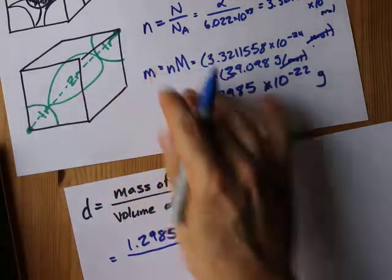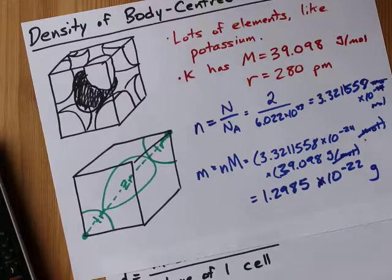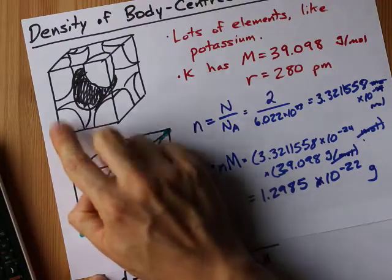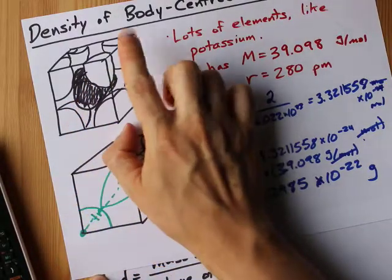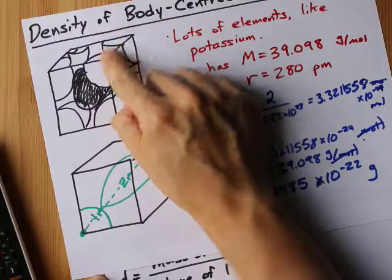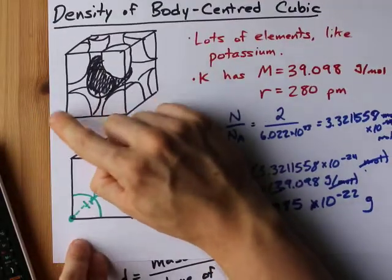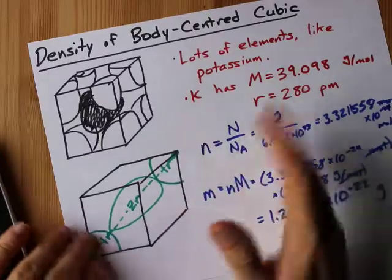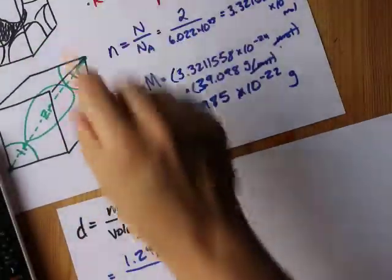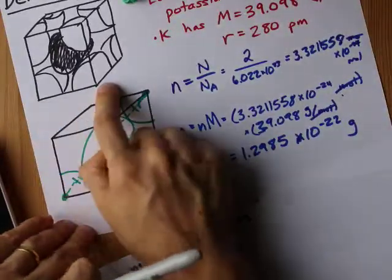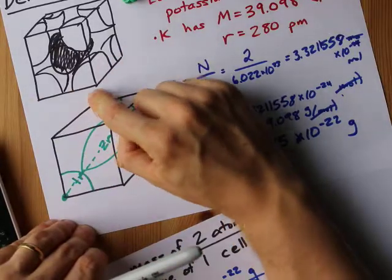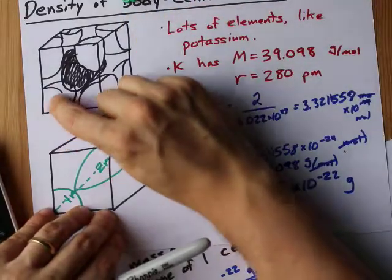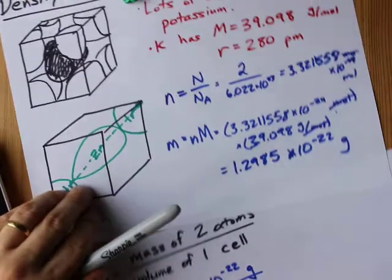We can fill that into the numerator of our density calculation here. Now the volume of one unit cell is going to be a little more challenging. What I want to point out here is that it takes four radii - one for the corner atom, two for the whole atom in the center, and one for the extra corner atom opposite of the first one - to get from one corner to the next. We're actually going to have to use the Pythagorean theorem in three dimensions for this.